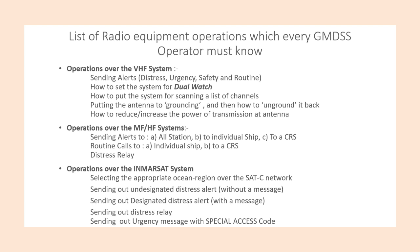List of radio content operations which every GMDSS operator must know. Operations over the VHF radio system include setting alerts for distress, emergency, safety, and urgency. How to set the system for watch, how to put the system for scanning a list of channels, how to ground the antenna and unground it, and how to increase the power of transmission at the antenna. Operations over the MF/HF systems include sending alerts to all stations, to EPIRB, to coast radio station, routine calls to individual ships, to coast radio station, and distress relay.